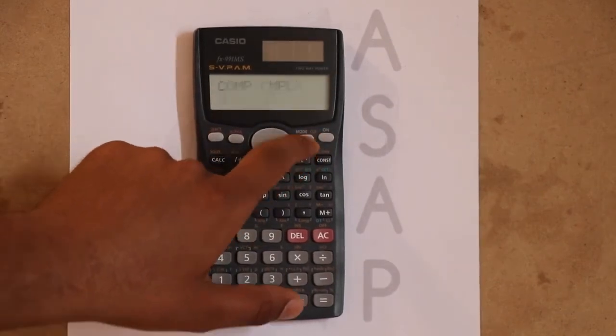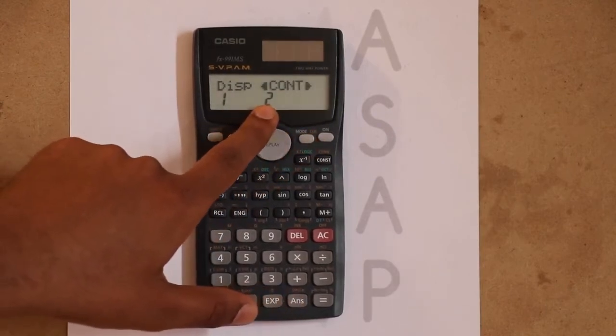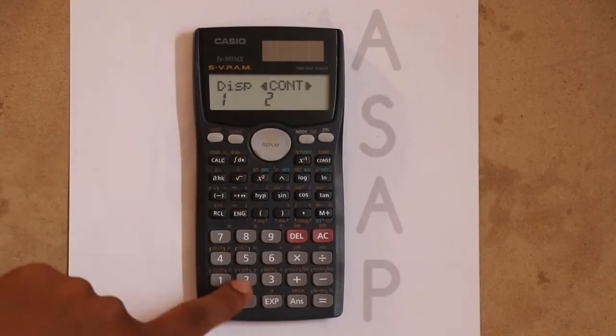Press the mode button six times. Here you will get the option for contrast. Press option 2.